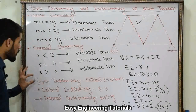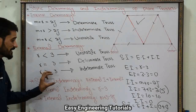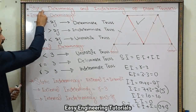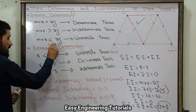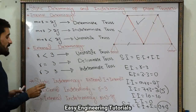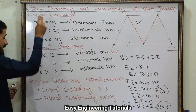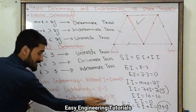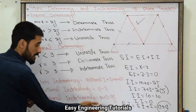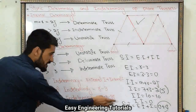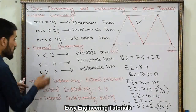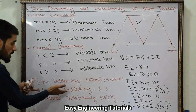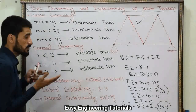Now, what is static indeterminacy? Static indeterminacy equals internal indeterminacy plus external indeterminacy, where internal indeterminacy equals M plus R minus 2J, and external indeterminacy equals R minus 3.